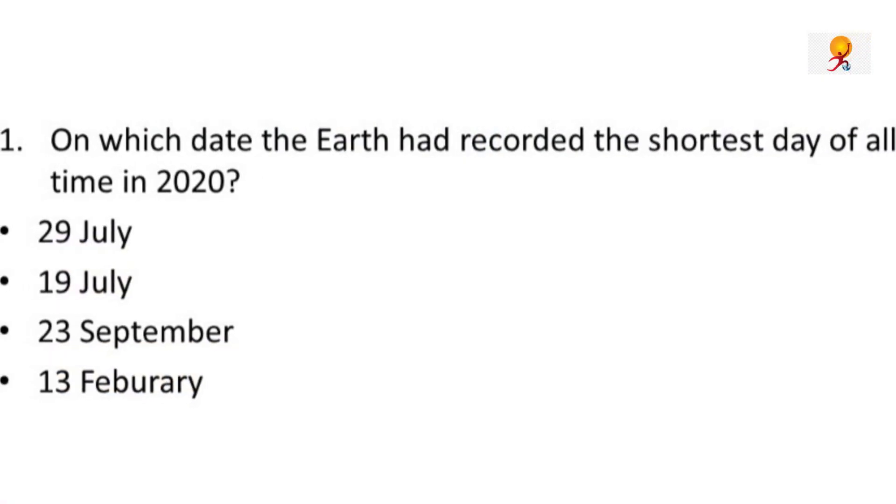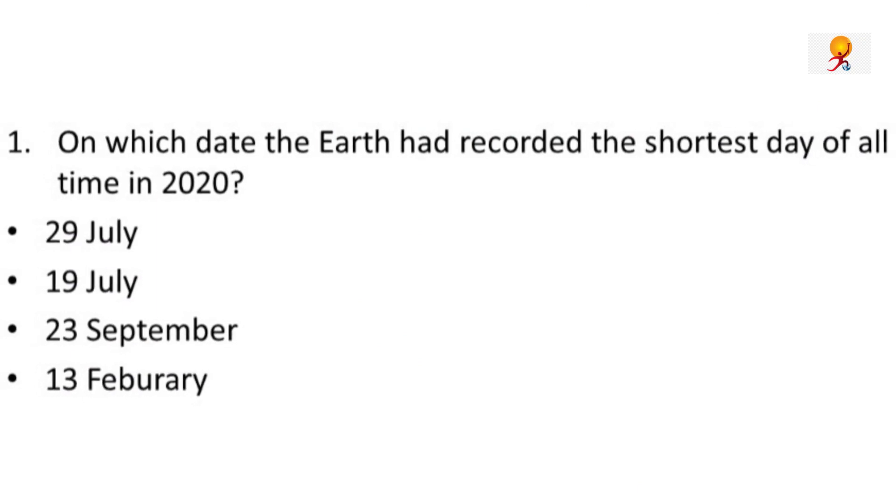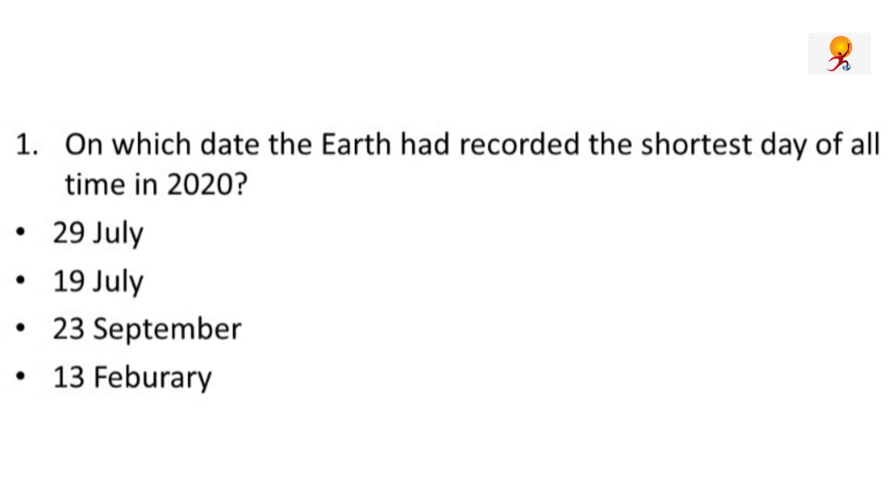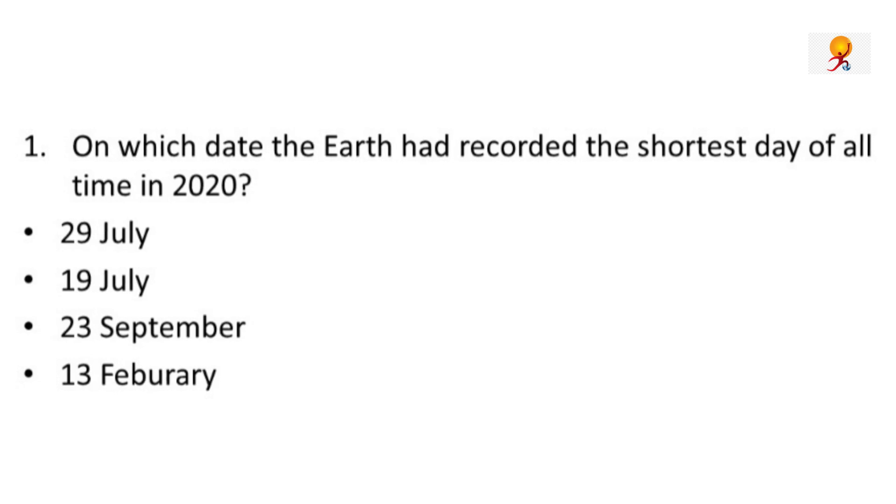Your question is: on which date did the Earth record the shortest day of all time in 2020? Your options are 29 July, 19 July, 23rd September, and 13 February. So now let's start our video.